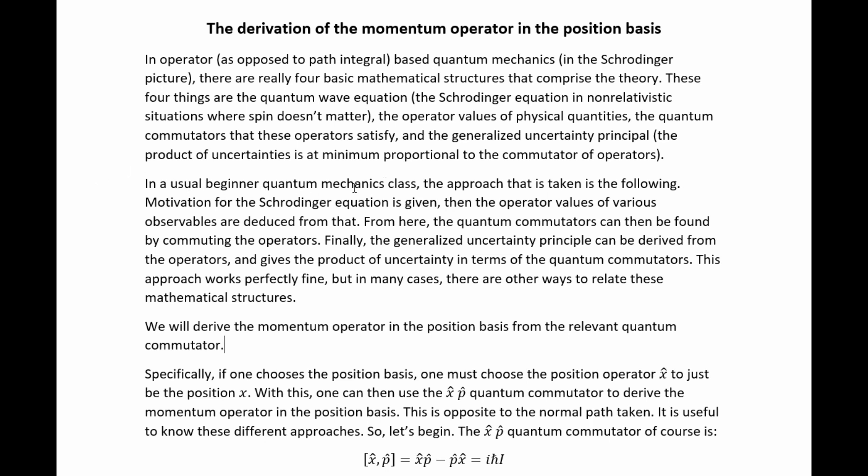In a usual beginner quantum mechanics class, the approach that is taken is the following. Motivation for the Schrodinger equation is given, then the operator values of various observables are deduced from that. From here, the quantum commutators can then be found by commuting the operators. Finally, the generalized uncertainty principle can be derived from the operators and gives the product of uncertainties in terms of the quantum commutators.